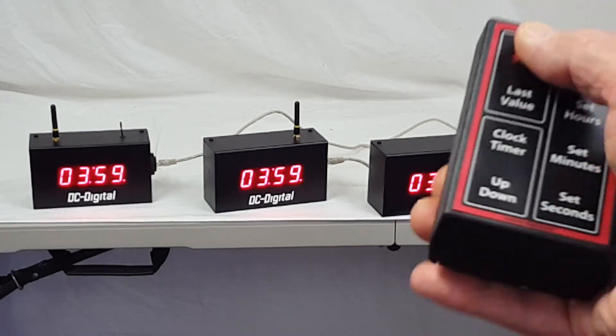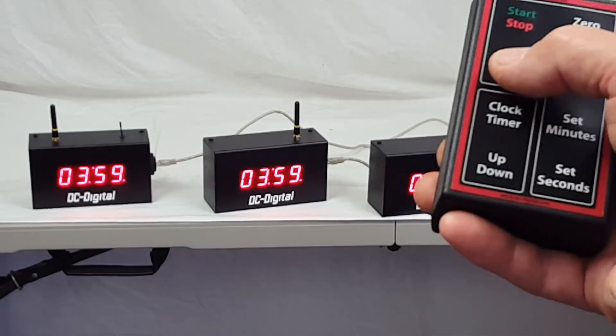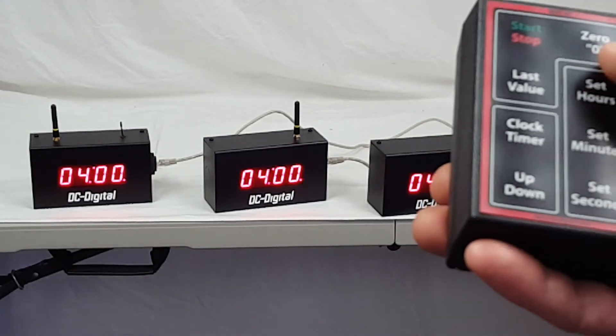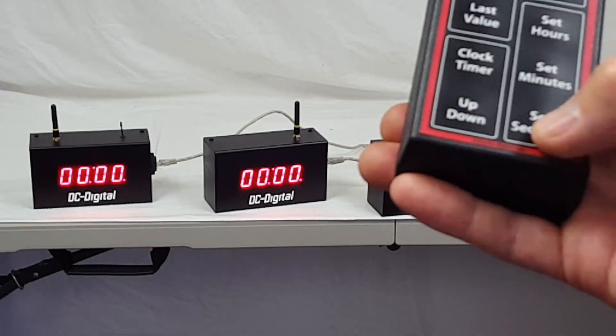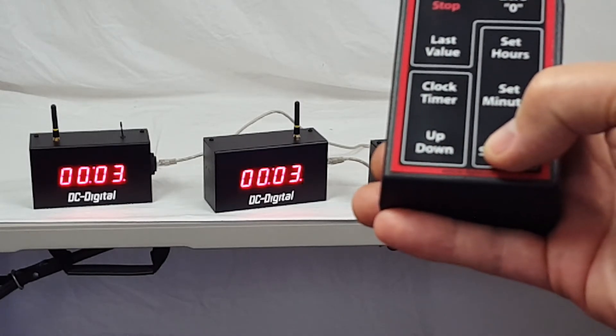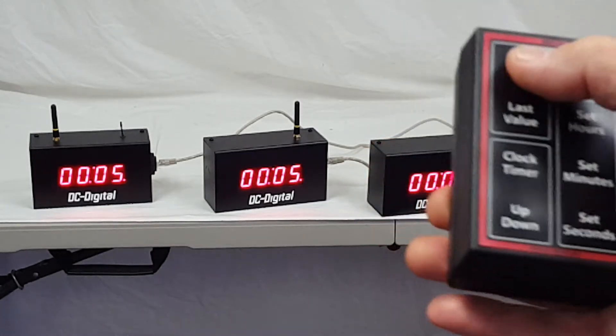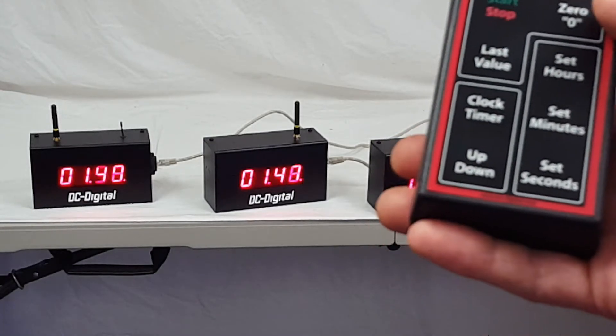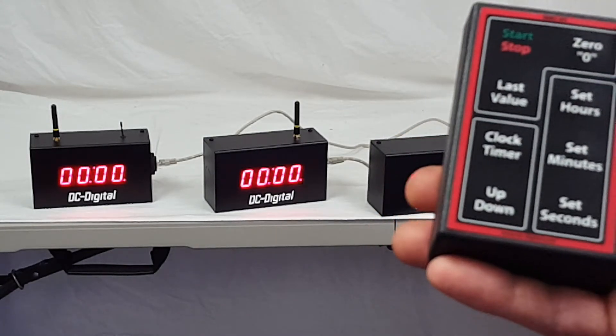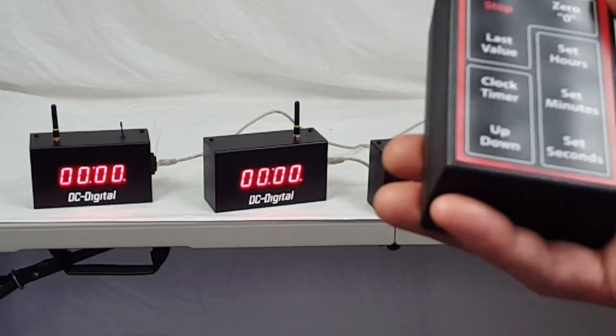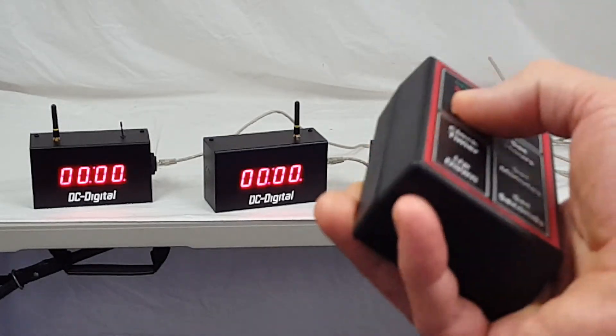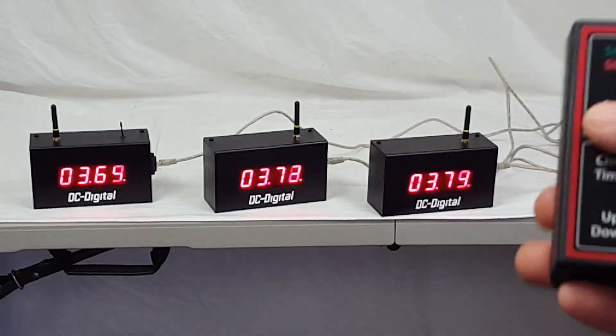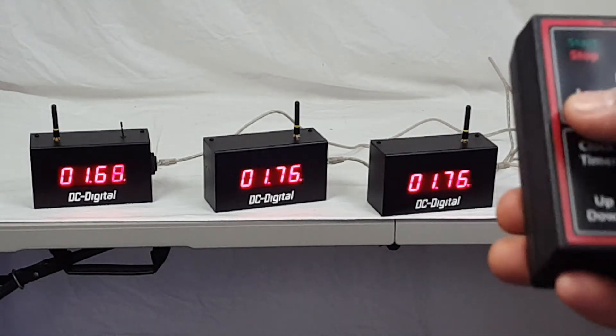I'm going to stop it. I'm going to go back to the last value, and we had it for four hours. I'm going to zero it. I'm going to set it for five seconds. Go ahead and start it. No flashing colon. And so it is zeroed. We're going to hit last value. You can do this all day, all night. Go back to last value, start, last value, start.